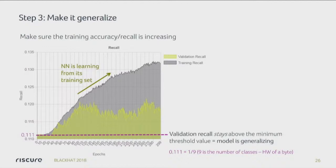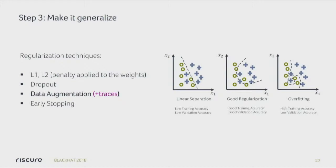So you make your network bigger and bigger until you get good training accuracy, then you make sure your validation accuracy goes up too. For the Hamming weight of a byte there are actually nine classes — Hamming weight zero to eight — which means flipping a coin gives you the right answer one out of nine times. That's the minimum accuracy you want to see; as soon as it goes above that you're generalizing. For making the network generalize, I'll highlight data augmentation: if you have few examples, you can artificially create new ones — take a trace and generate ten examples of it with different misalignments, helping the network learn to cover for misalignment.